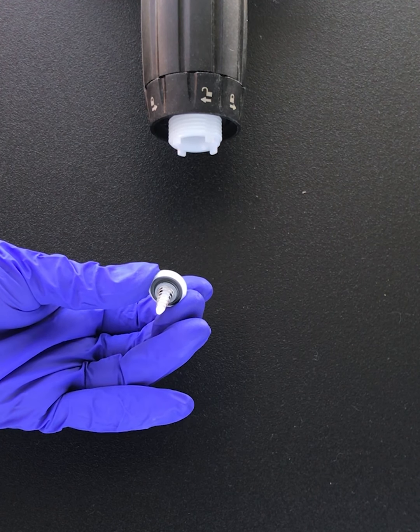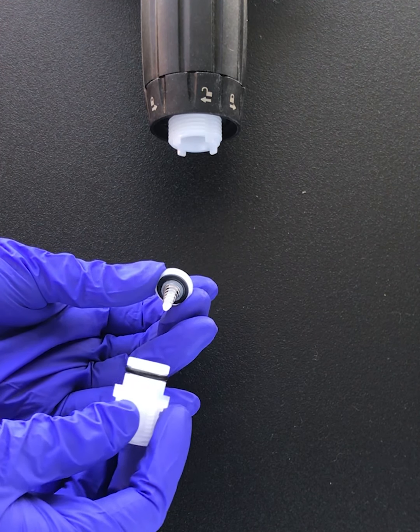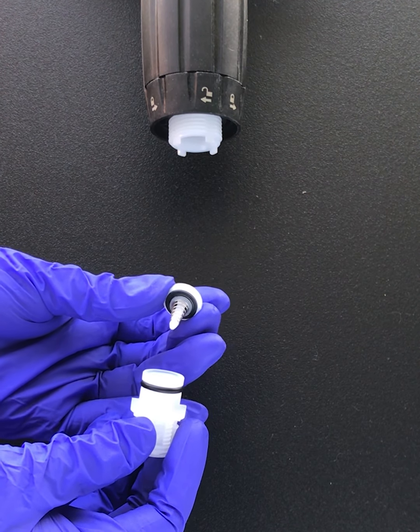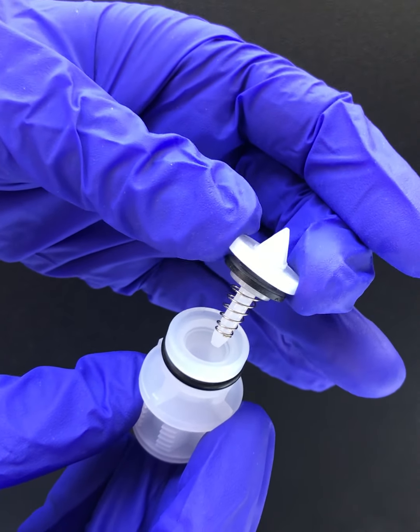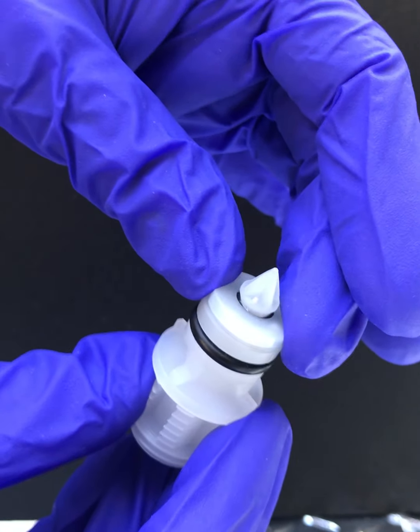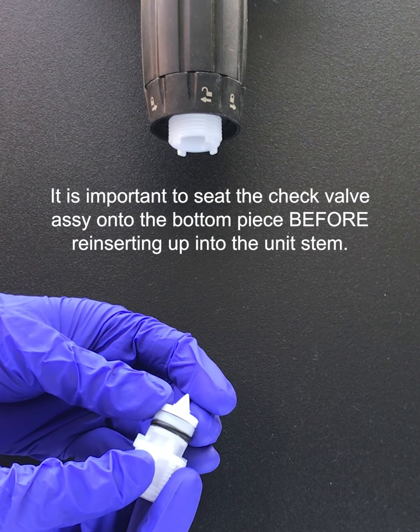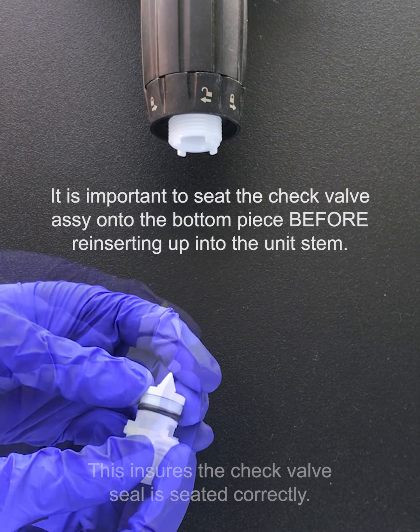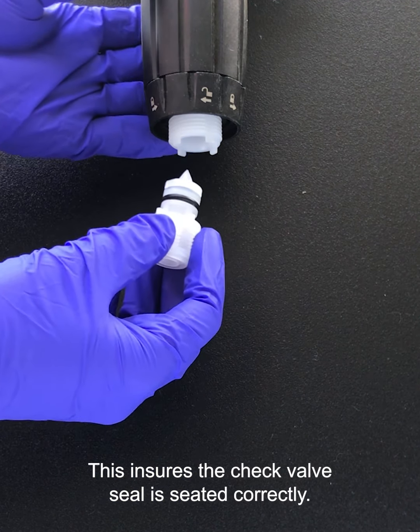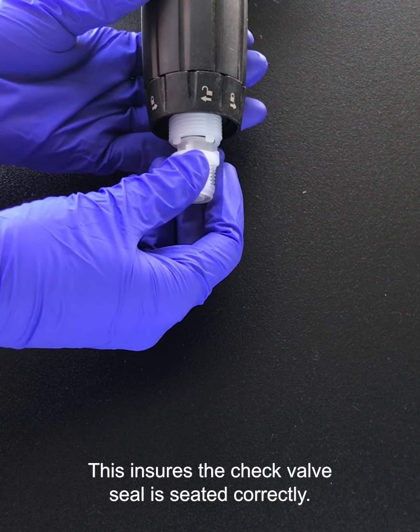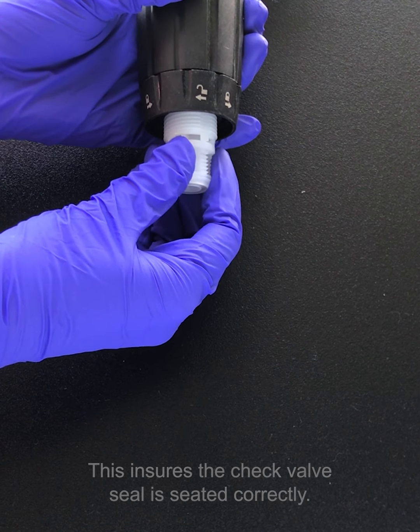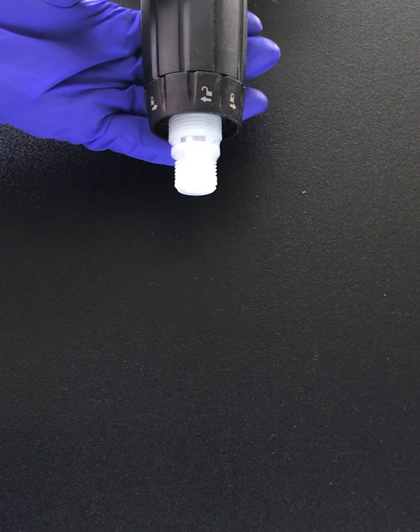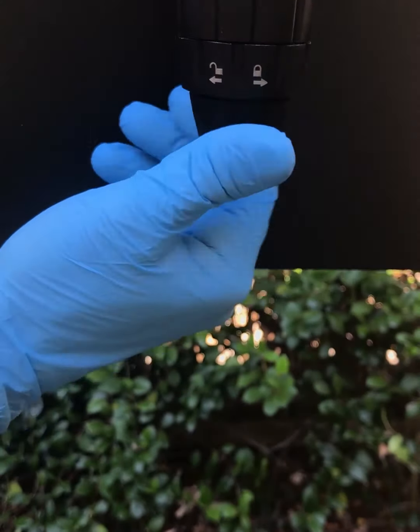In order to do so, you need to reinsert the spring downward first, like so, making sure the black seal is sitting properly on the groove. You can wiggle it to make sure it is on there correctly. Then it is time to reinsert it into the bottom of the stem assembly, like so. You will feel the O-ring locking into place. Reattach the check valve and tighten hand tight.